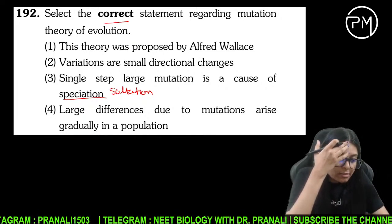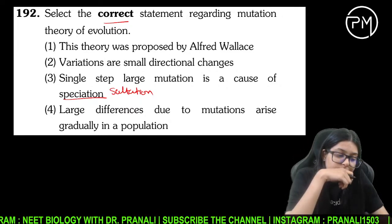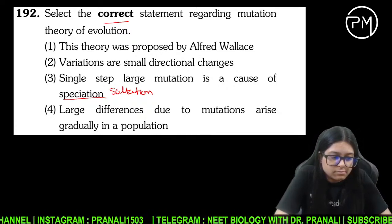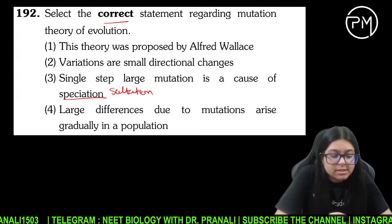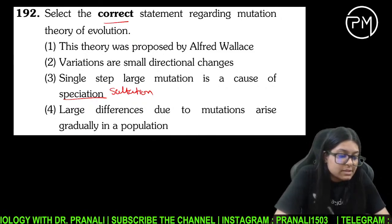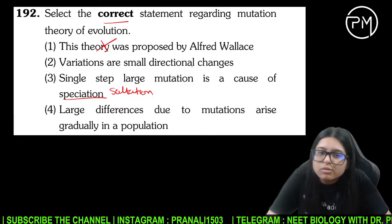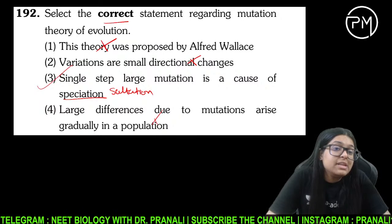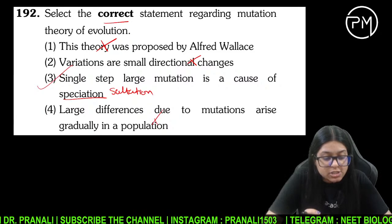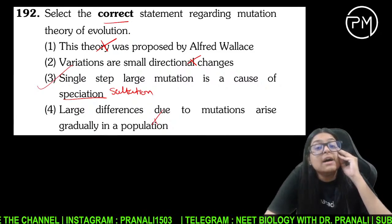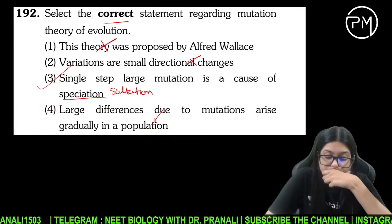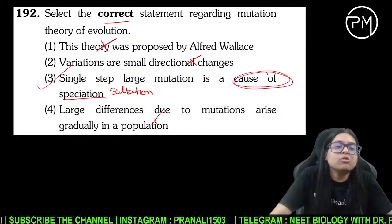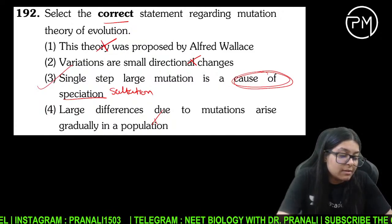Select the correct statement regarding mutation theory of evolution. Mutation theory of evolution kisne di thi? Hugo de Vries ne di thi. Variation small hote hain kya, directional hote hain kya? Directionless hote hain. Most appropriate dekho — third wala hi hai kyunki speciation se batana chahta hai ki ek bada change hua — saltation is caused by large mutations. 192 ka answer 3 hoga.